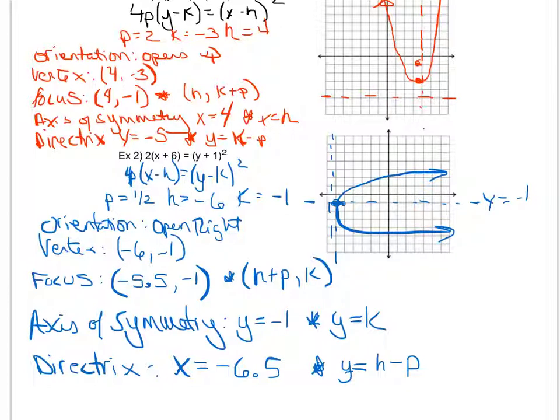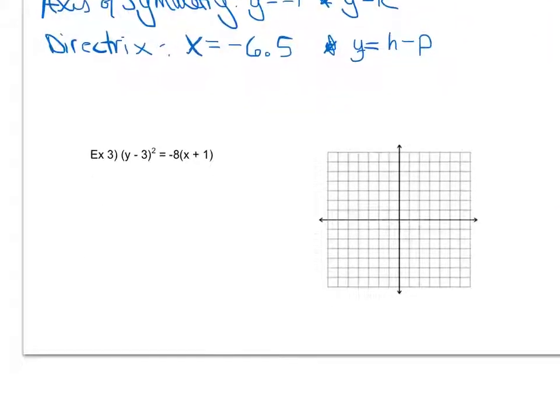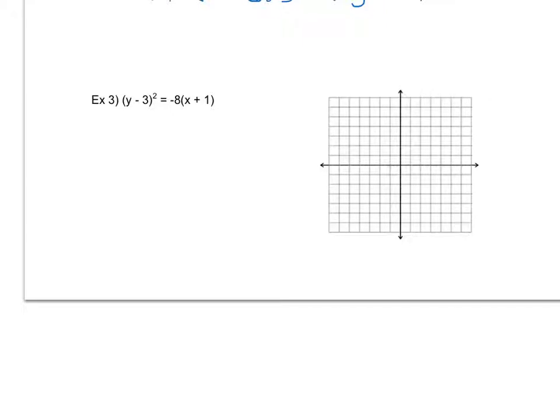Looking at the final example, as I said before, this would be a good one for you to pause and try. Okay, so now that you've had a chance to try one, let's go through it together. So first thing I'm going to do is I'm going to try to figure out what form I have here. So I see I have (y - k) squared equals 4p times (x - h). I see that my p, in order for 4p to become negative 8, I see p has to be -2. I see my k value is just 3, and I see my h value is -1. My k value is 3.